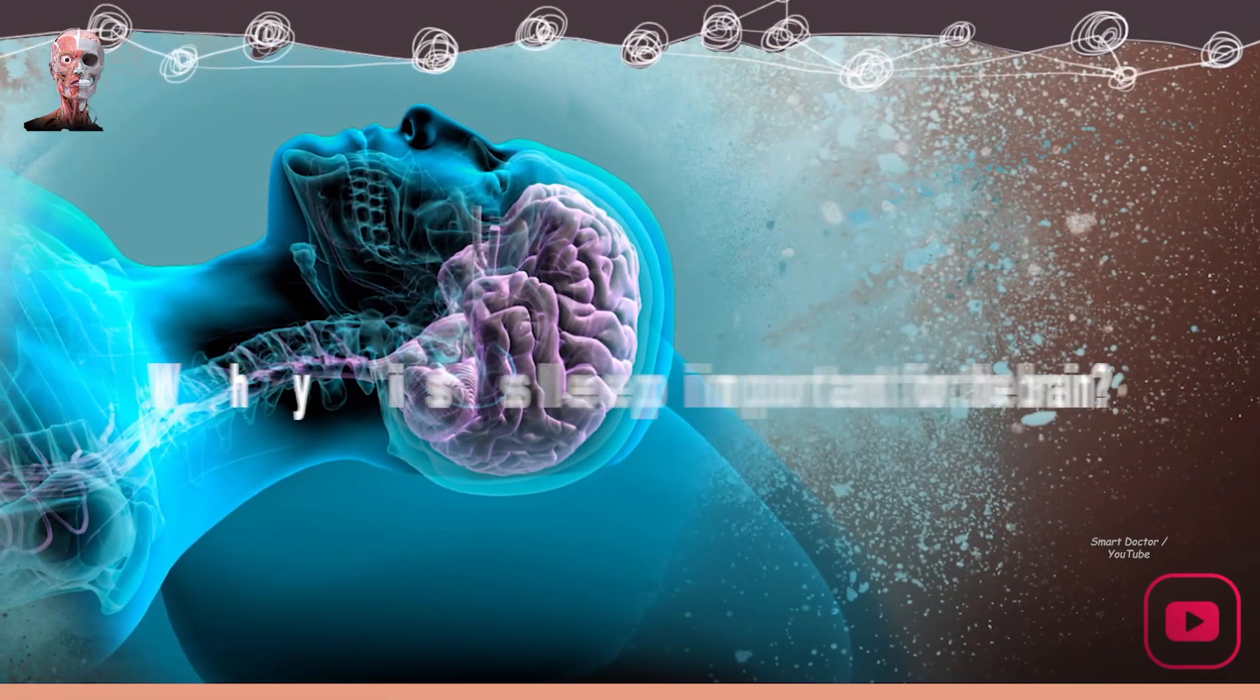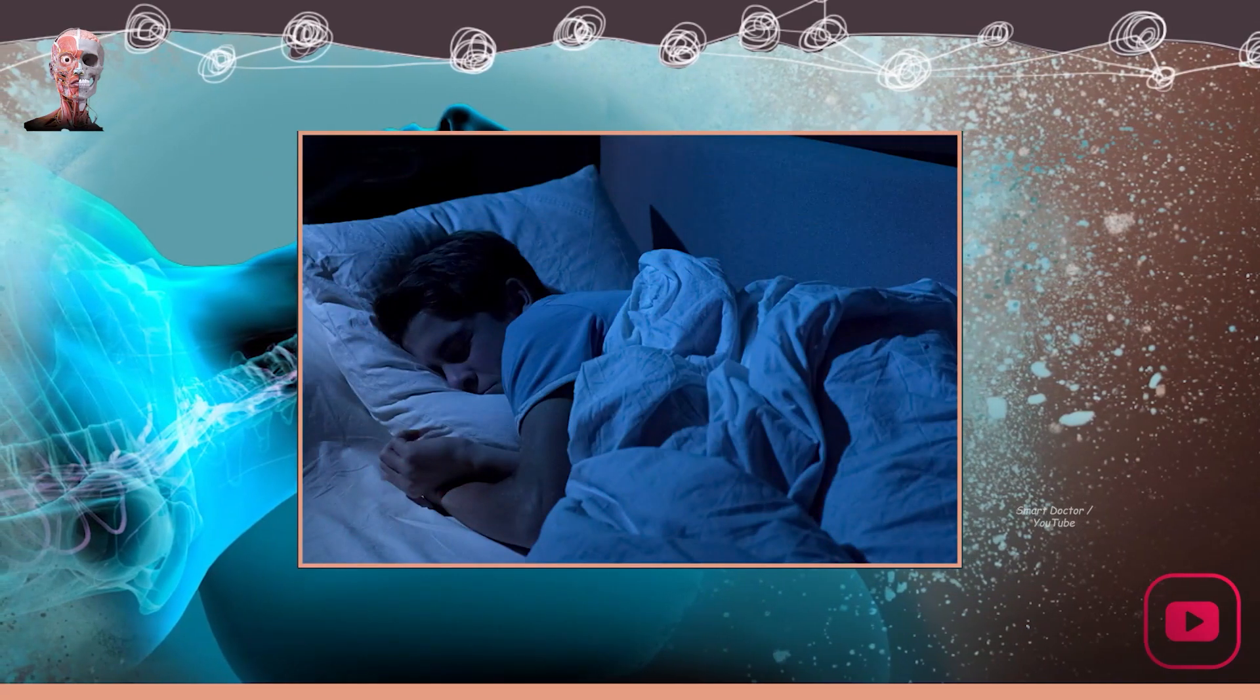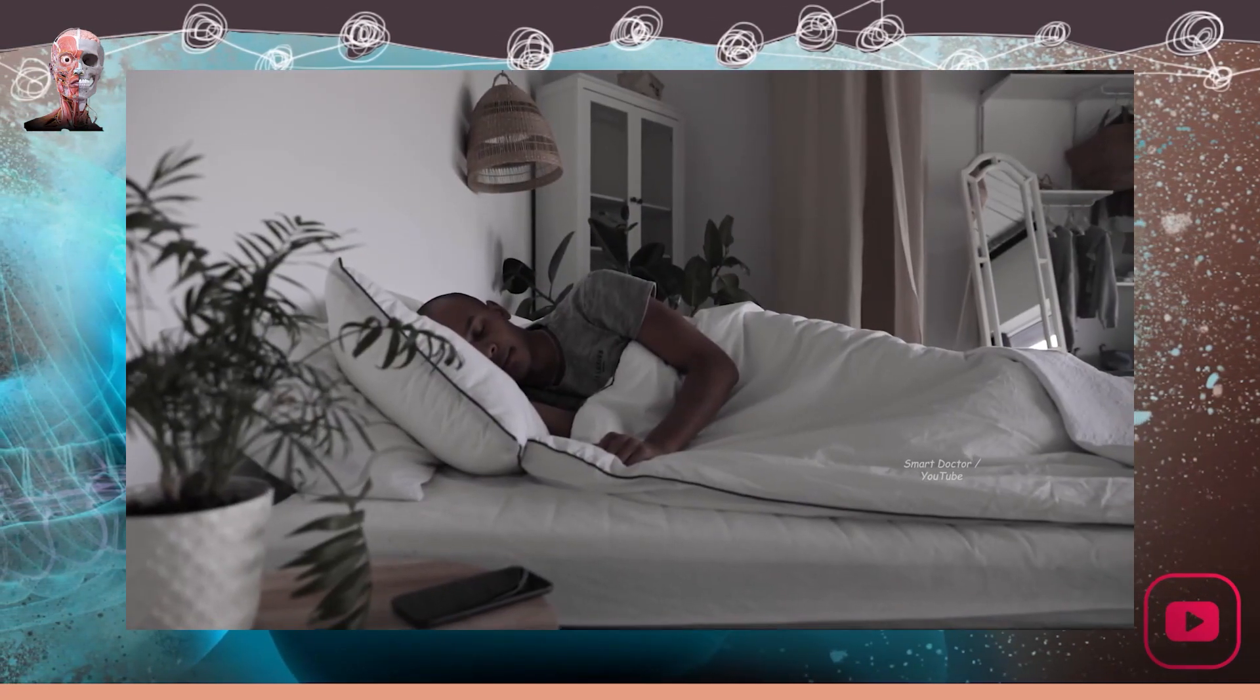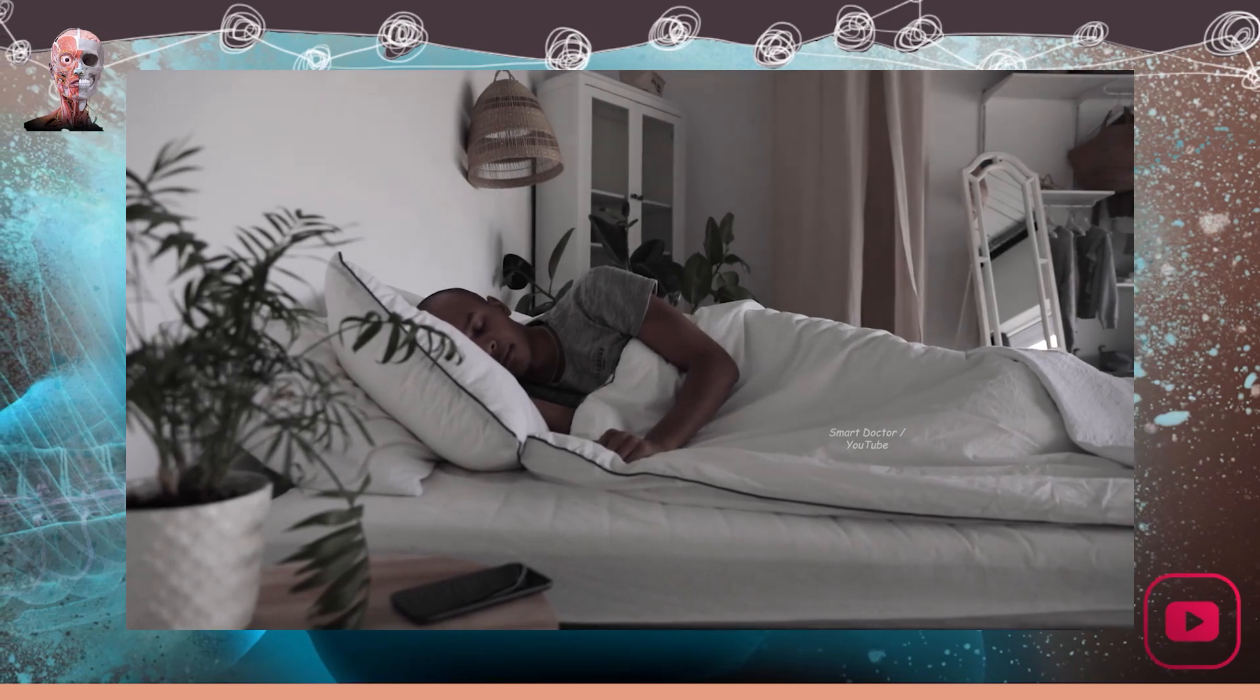Why is sleep important for the brain? Sleep is of vital importance. It is not a suspension of the functioning of the nervous system, but an active, inherited neurological function.